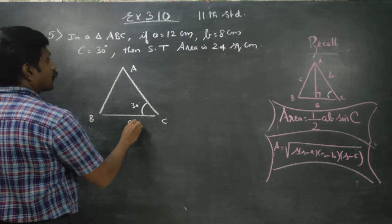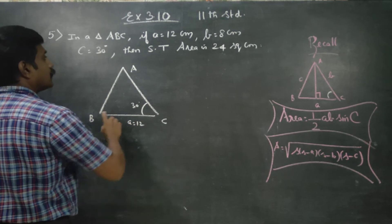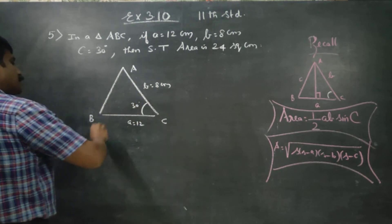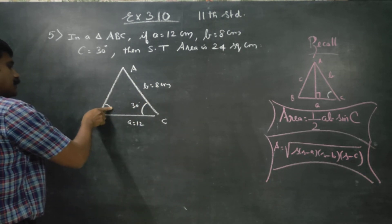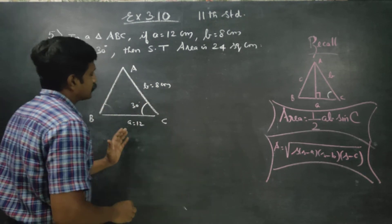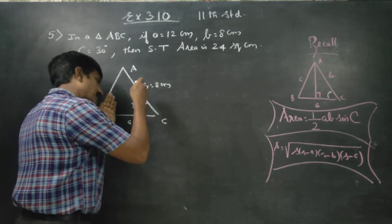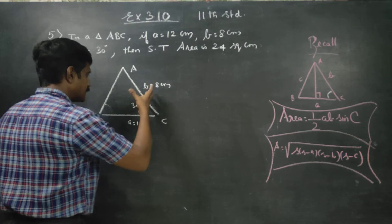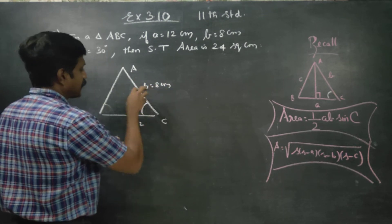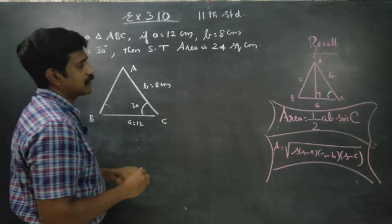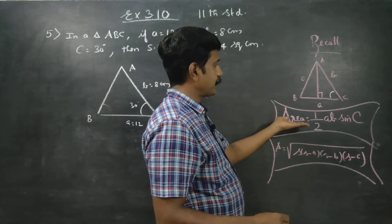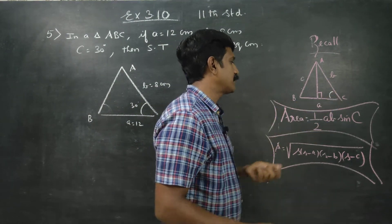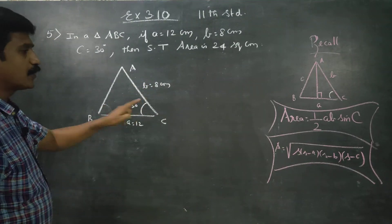This is small letter a, which is 12. The opposite of B is small letter b, so capital B corresponds to small b. If you have two sides and an included angle, we will use the Sides and Included Angle formula.